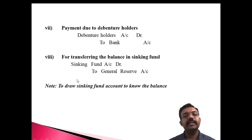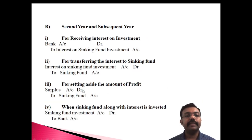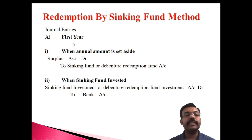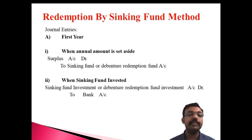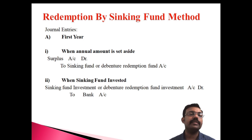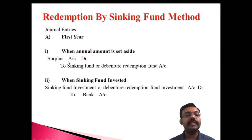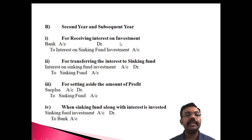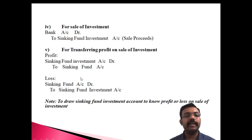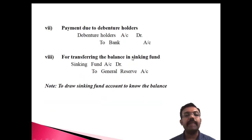So basically there are three year types: the first year, the second and subsequent years, and the last year. Suppose there are four years in the question — the first year is year one, the last year is year four, and years two and three are the subsequent years. These are the entries regarding the sinking fund method for each year category, ending with the entries for transferring the balance in the Sinking Fund Account.